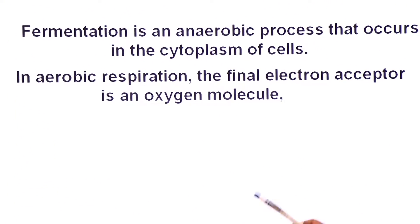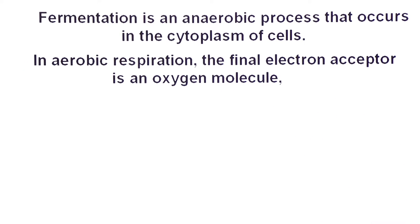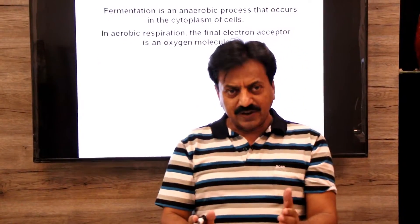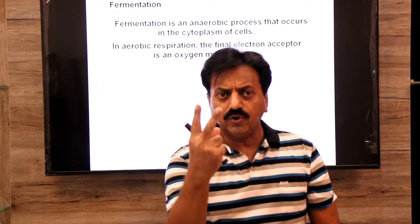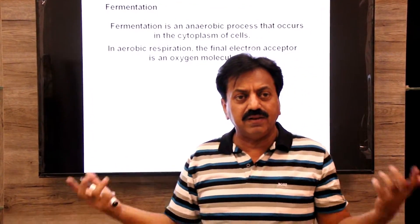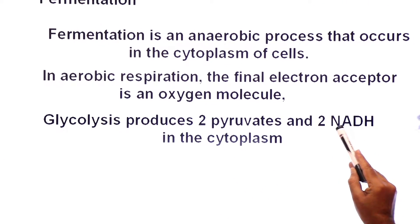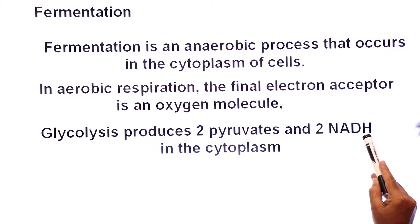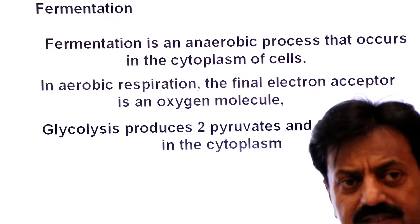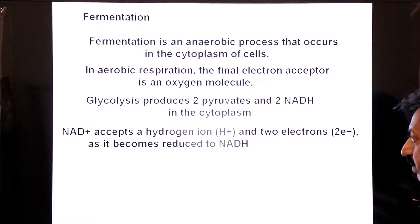In aerobic respiration, the final electron acceptor is an oxygen molecule. In glycolysis step 6, the NADH generated needs to give electrons to oxygen — but oxygen is not available. So what happens? Glycolysis produces two pyruvates and two NADH. These NADH molecules were given electrons so that they could pass them to oxygen, but oxygen is absent.